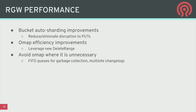On the RGW performance front, there are improvements for auto-sharding — automatically splitting bucket indexes as buckets get very large. There's also a lot of work around OMAP usage. RGW was using OMAP, which stores key-value data in RADOS objects, in places where it didn't need ordered keys and really just needed a queue. Much of that work is being shifted away from OMAP. In other places where OMAP is still used, delete range is being applied to make it more efficient.